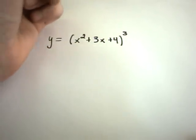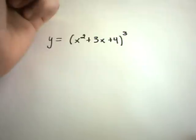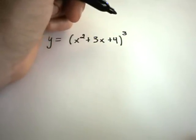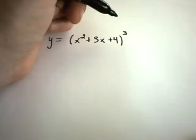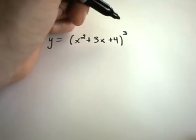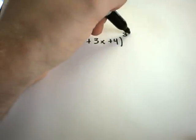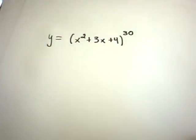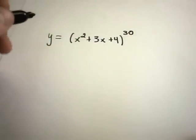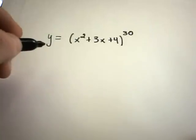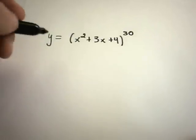Well, if you had to, you could always just multiply this out, x squared plus 3x plus 4, three times, combine your like terms, and then use your basic formulas. But suppose instead of to the third power, I made it to the 30th power. Probably not going to want to multiply this thing out 30 times and collect your like terms.